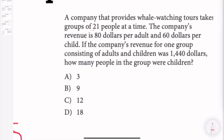A whale-watching tour company takes groups of 21 people at a time. The company's revenue is $80 per adult and $60 per child. If the company's revenue for one group consisting of adults and children was $1,440, how many people in the group were children? I know I have two variables here: adults and children.